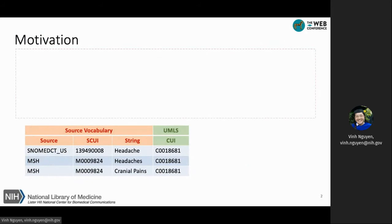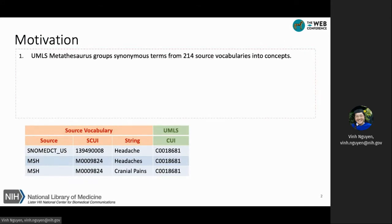The motivation of this work comes from the UMLS project at the Library of Medicine. UMLS stands for Unified Medical Language System and it has been integrating over 200 biomedical terminologies by identifying synonymous terms and assigning them into the same concept unique identifier, or CUI. For example, headaches from SNOMED-CT and headaches from MeSH are synonymous and therefore assigned to the same CUI.